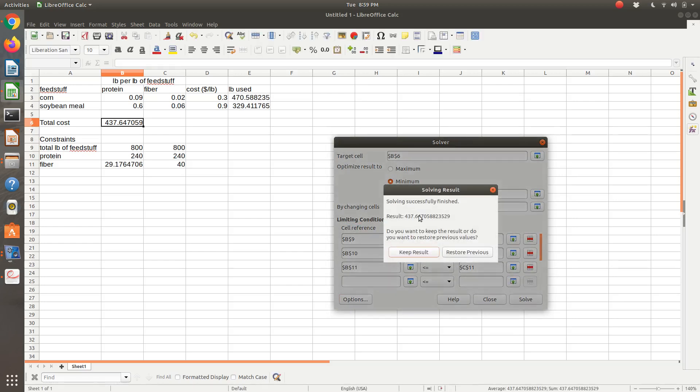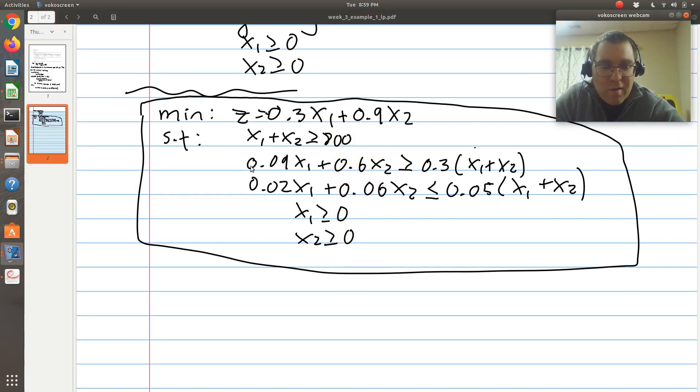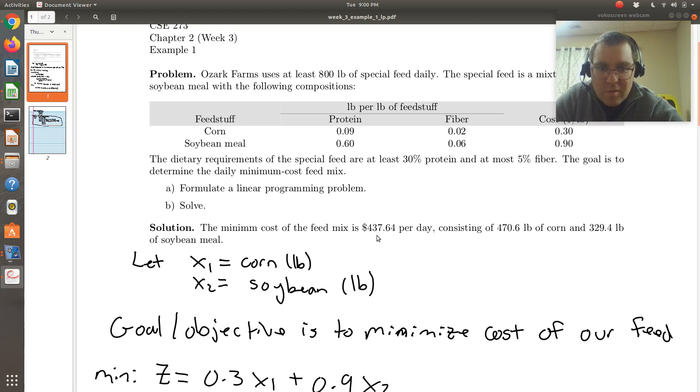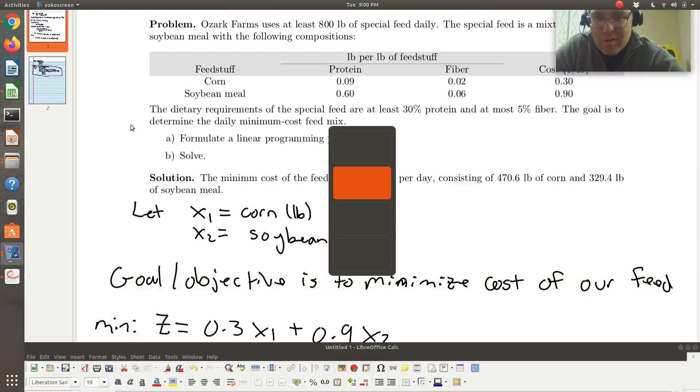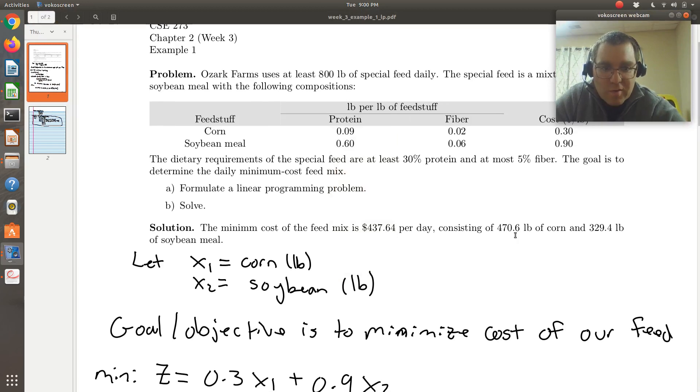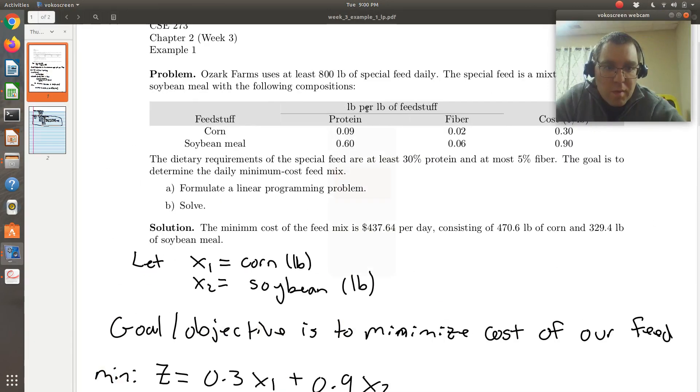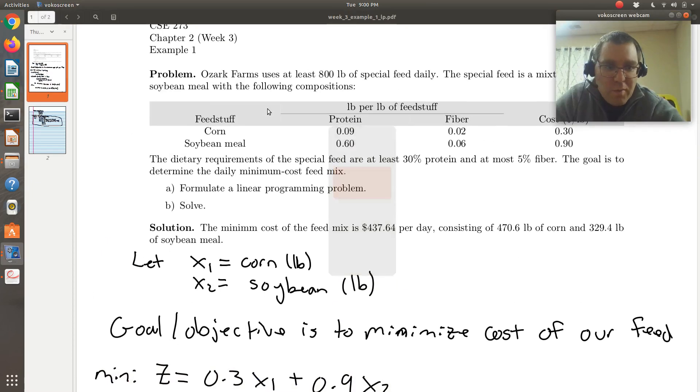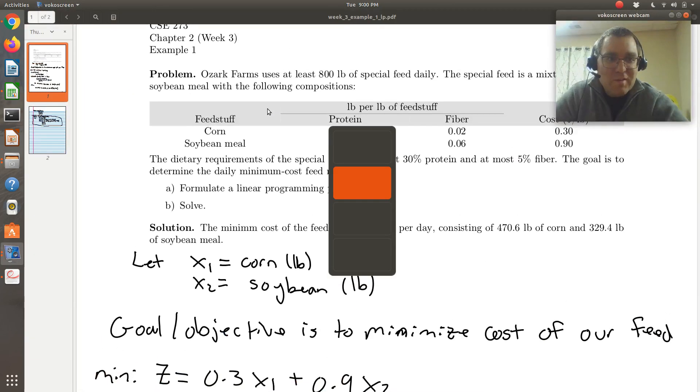So that's solving, it says it finished successfully, let's keep the result, and let's compare to our answer that we're given. So if I scroll up, we're told that the minimum cost of the feed is $437.64 per day. $437.64, I get essentially the same if I was to round up. So 470.6 pounds of corn, 470.6 pounds of corn, 329.4 pounds of soybean meal, 329.4 pounds of soybean meal. Yeah, so you got it. So success.